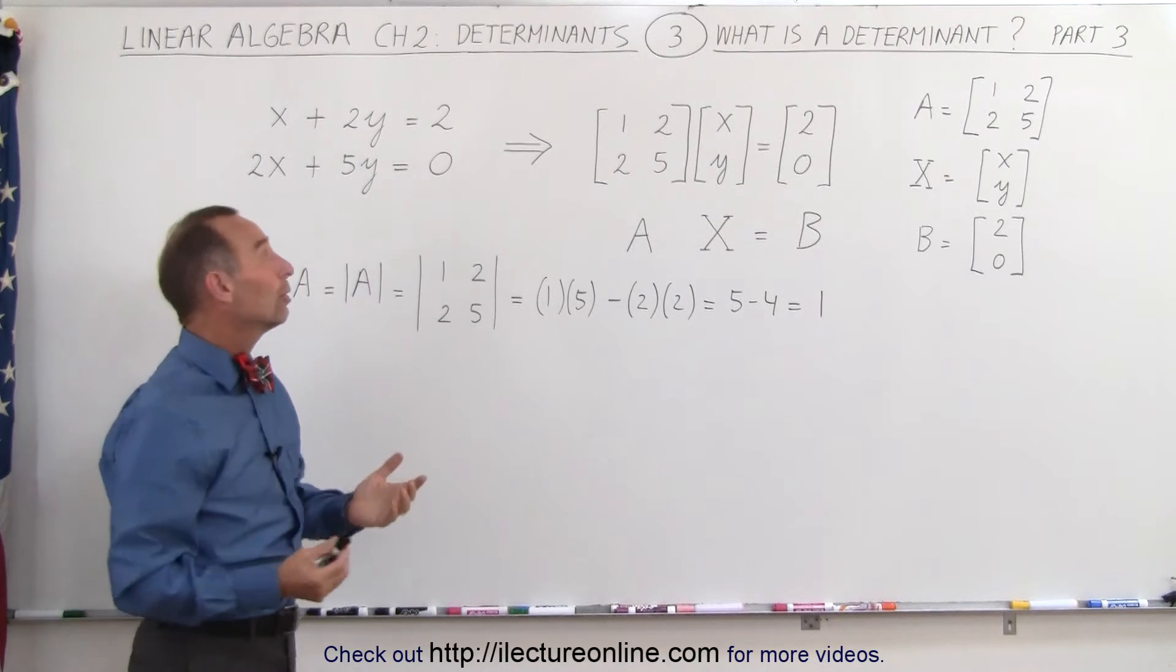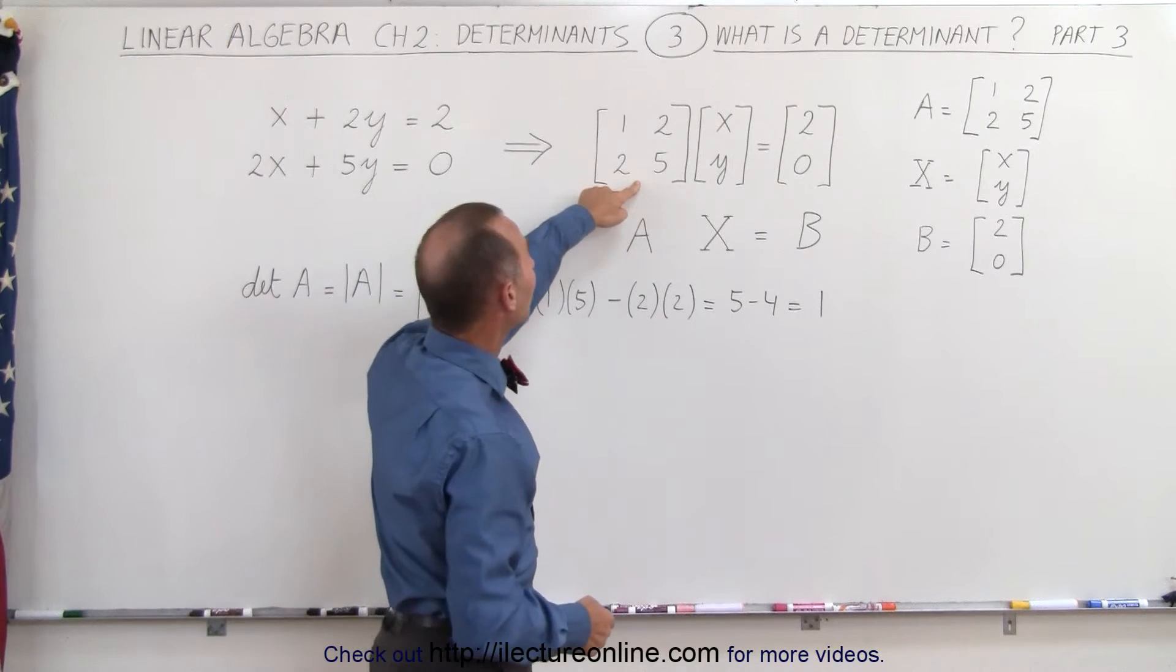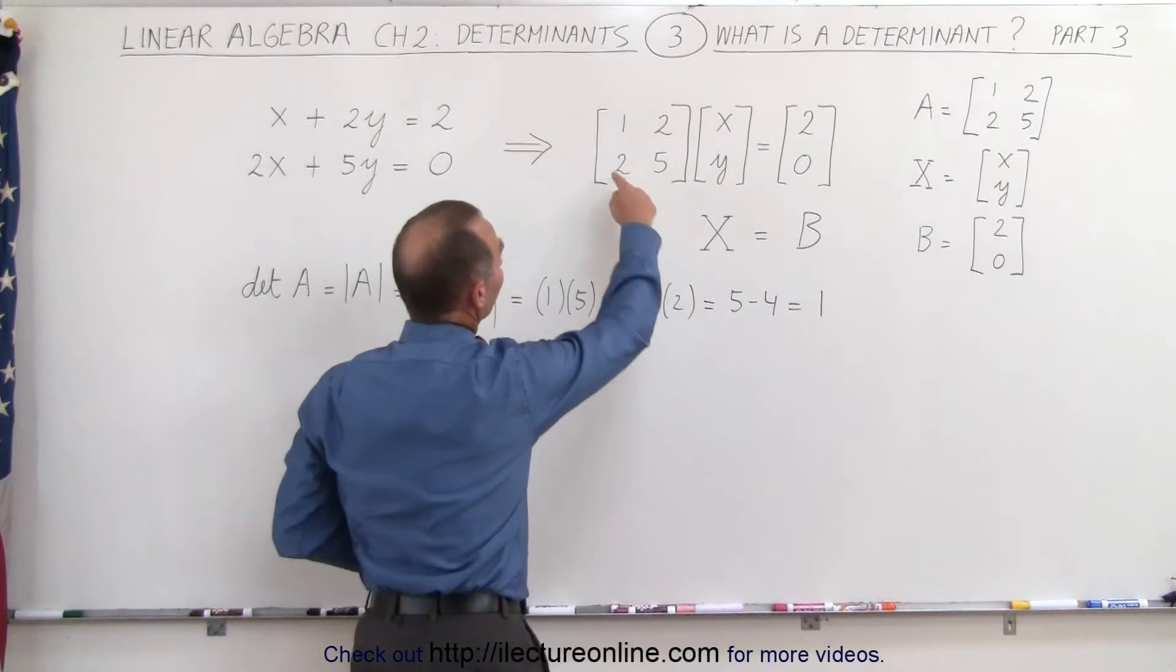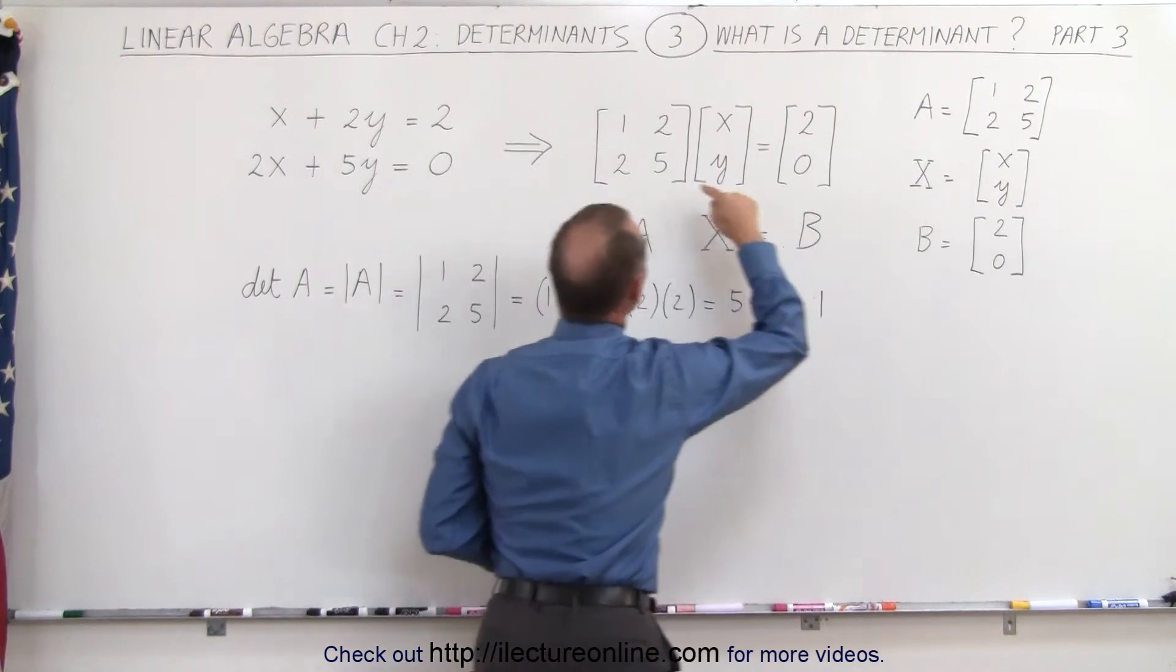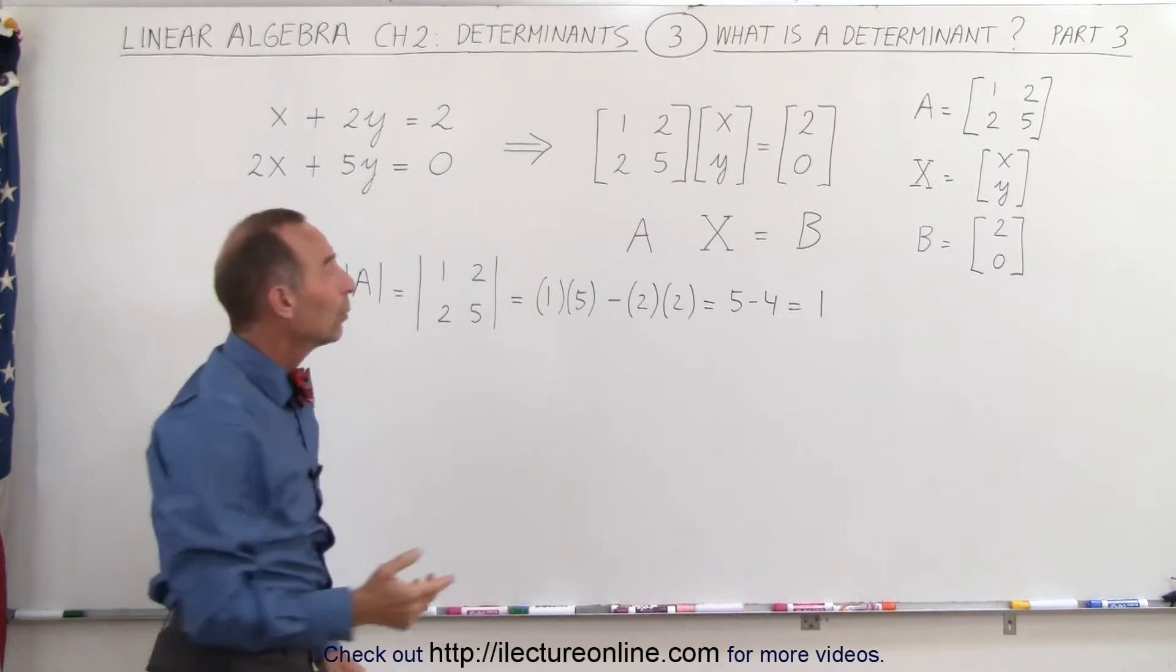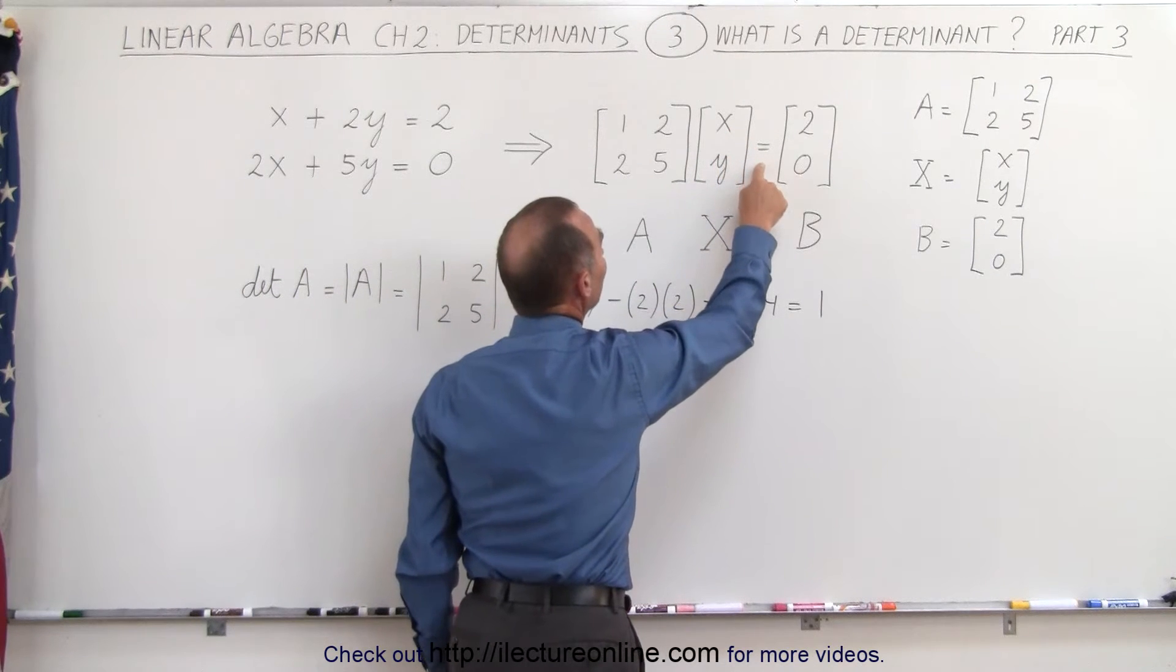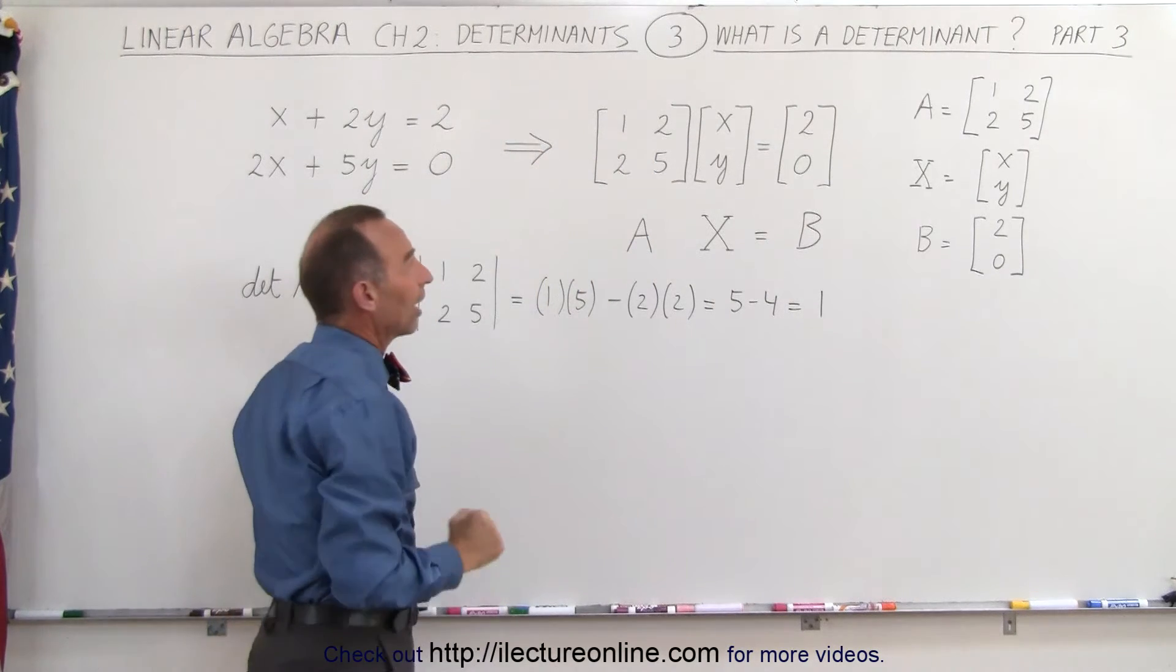What we can do is write this in a matrix format. We can write it as this matrix times this matrix equals this matrix. The first matrix, we'll call matrix A, is simply the coefficients of x and y on the left side of the equal sign. Then we have a matrix that contains the two variables x and y, and a matrix that contains the constants on the other side of the equal sign.